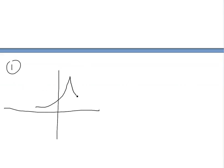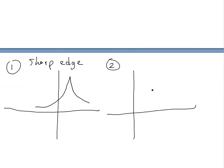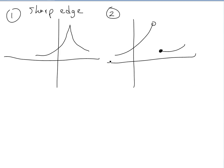The first case is if you have a sharp point — a sharp edge or corner in the curve. The second case is if you have a break, a discontinuity in the graph.